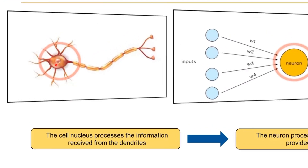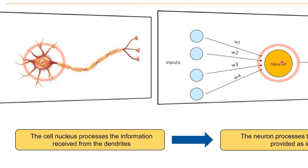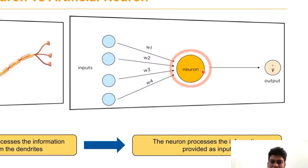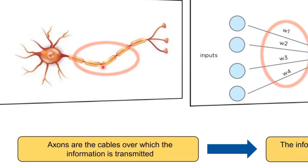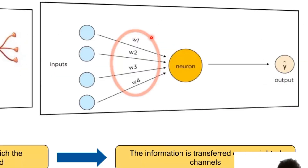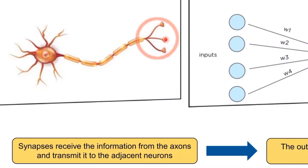The cell nucleus processes the information, and similarly the neuron processes the information in artificial networks. Axons are the cables through which information is transmitted. In artificial neurons, the information is transmitted and measured as weights. Synapses receive the information from the axons and this received information is transmitted to adjacent neurons.